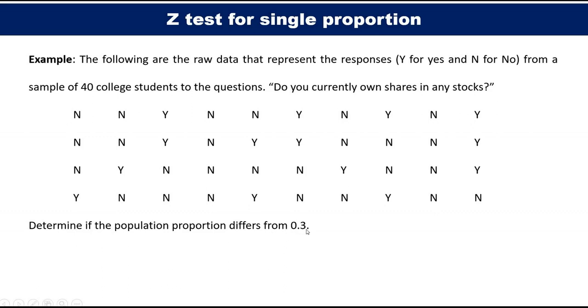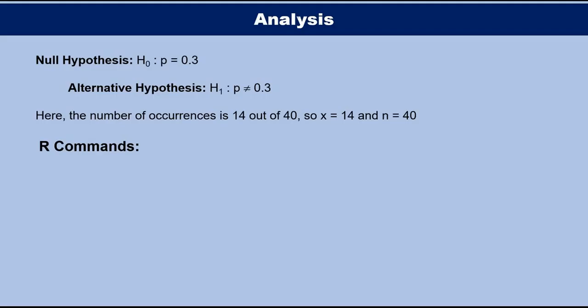Y represents yes and N represents no, and we determine if the population proportion differs from 0.3. First we need to write the null hypothesis. Here we take the null hypothesis is p equal to 0.3 and the alternative hypothesis p not equal to 0.3. Here the number of occurrences is 14 out of 40, so x is 14 and n equal to 40.